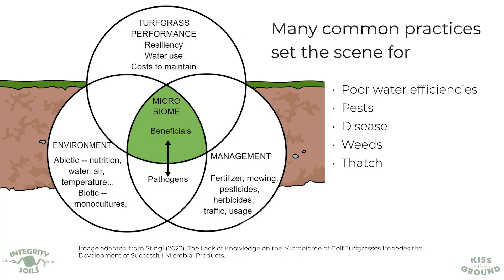If we think about many of our common practices, they really are setting the scene for poor water efficiencies, pests, weeds, disease, and breakdowns like thatch or water-repellent soil systems. The outcome of all of this is dictated by many, many factors.